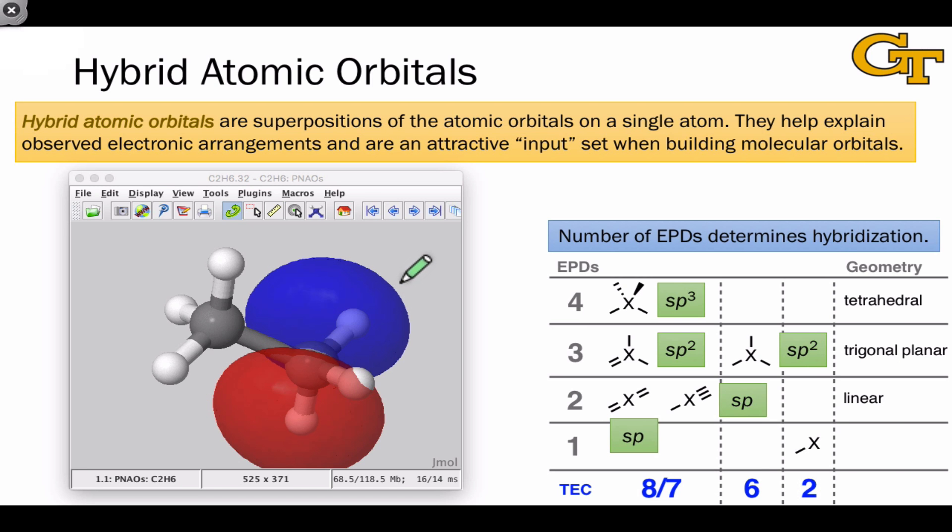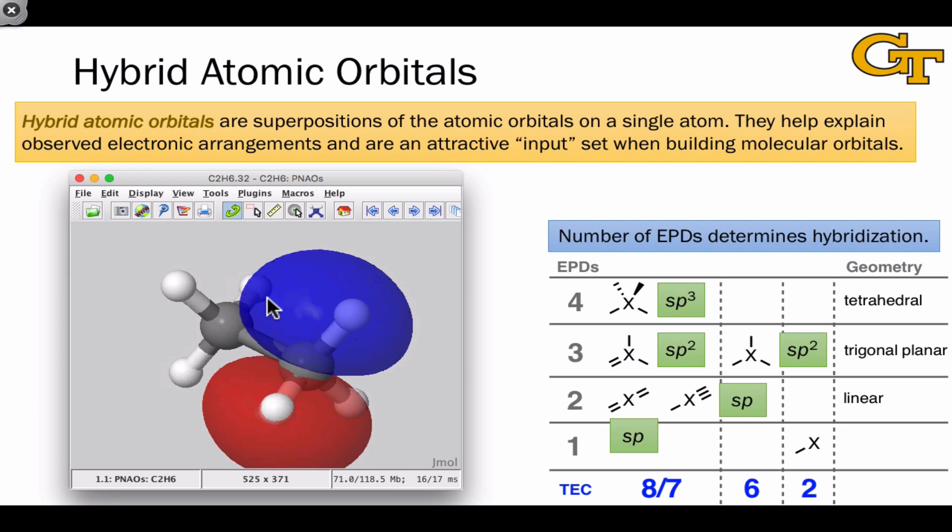One of the problems we run into when thinking about using these valence atomic orbitals for bonding in organic molecules is that the orientations of the orbitals don't line up with the atomic positions, which we can verify through other means.